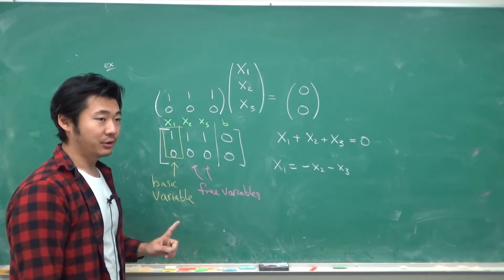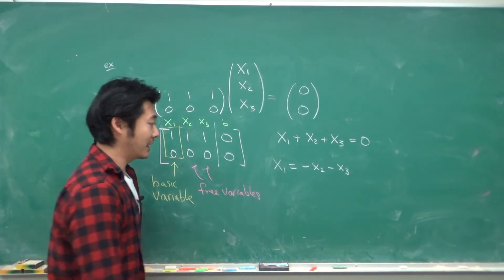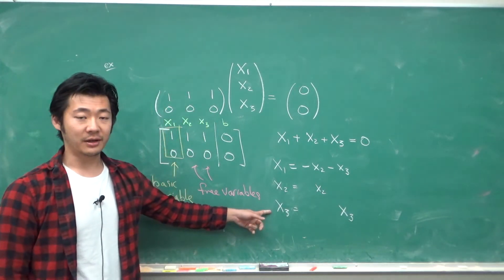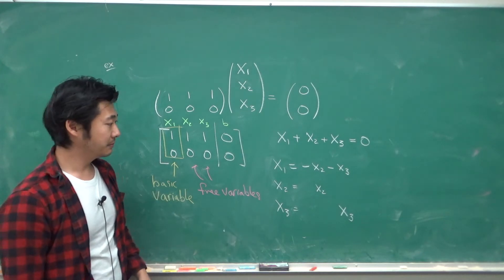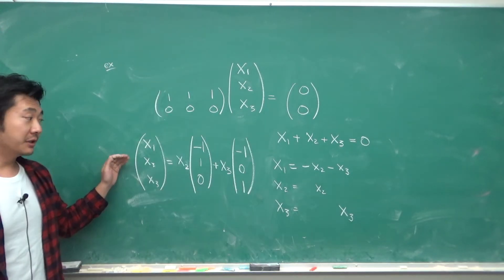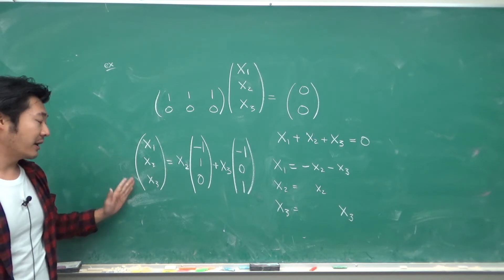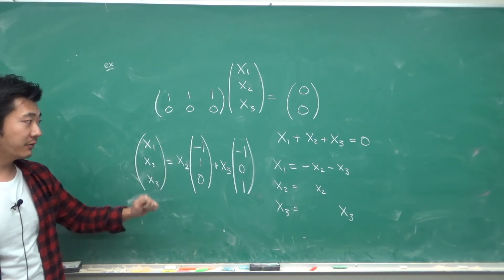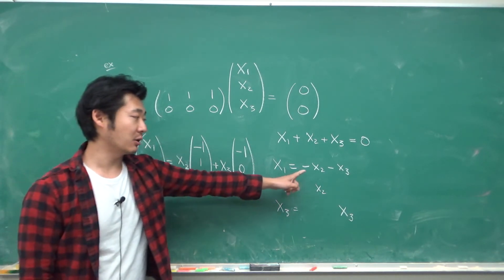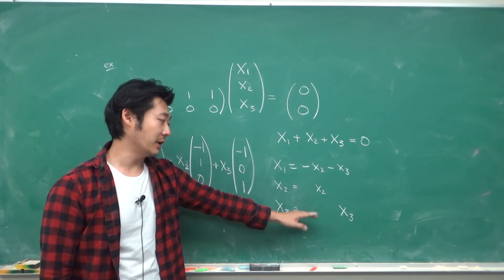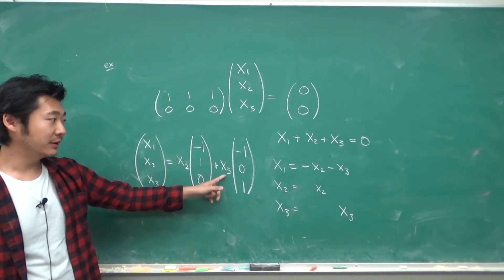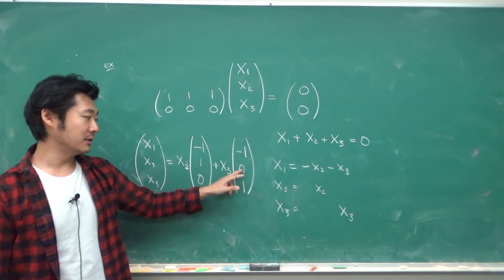And if we want to write out the solution in vector form, we have to write down x2 equals x2, x3 equals x3, because these are free variables. And now we can split this up in vector form, so that the solution vector x1, x2, x3 is equal to x2, one of the free variables, times the vector negative 1, 1, 0, because the coefficients here are negative 1, 1, and 0, and x3, the other free variable, times negative 1, 0, 1.